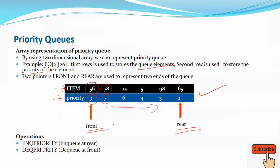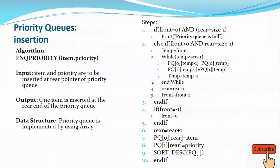So we will see the operations of the priority queue. We have the enqueue operation and we have the dequeue operation. Also we have the display operation, which is the same as already discussed in the case of queue and circular queue — that is display from front to rear. Enqueue is done at the rear end and dequeue is done at the front end. First we will see the algorithm for enqueue.